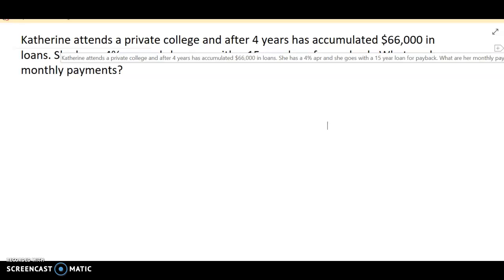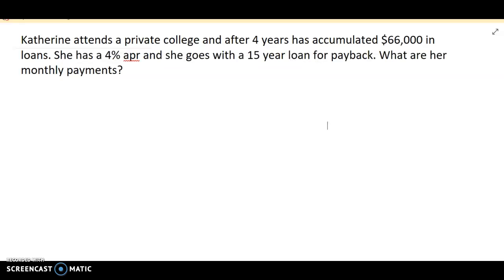So let's look at our first example. Catherine attends a private college and after four years has accumulated $66,000 in loans. She has a 4% APR and she goes with a 15-year loan for payback. What are her monthly payments?